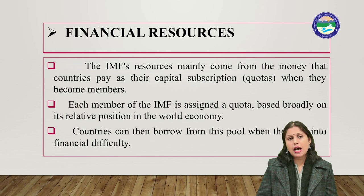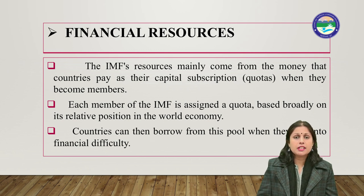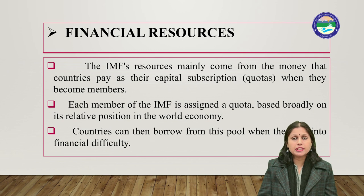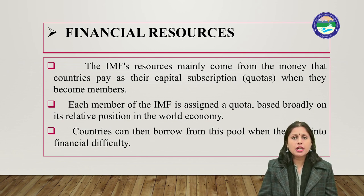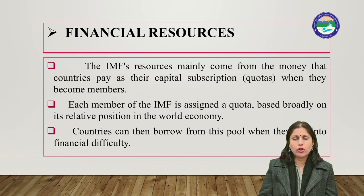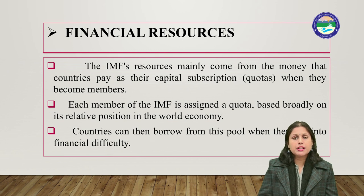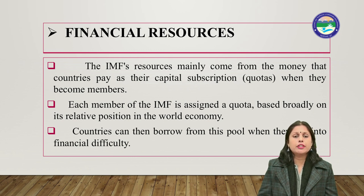Regarding financial resources — IMF resources mainly come from the money that countries pay as their capital subscription, called a quota, when they become members. Each member of the IMF is assigned a quota based broadly on its relative position in the world economy, so developed countries contribute more capital while developing countries contribute comparatively less. Countries can then borrow from this pool when they fall into financial difficulty.